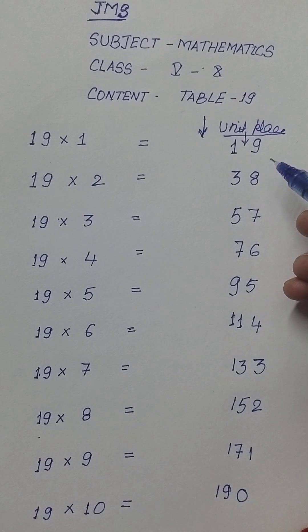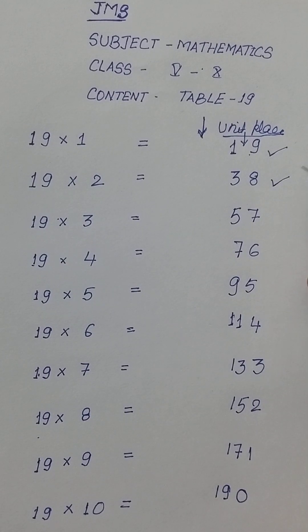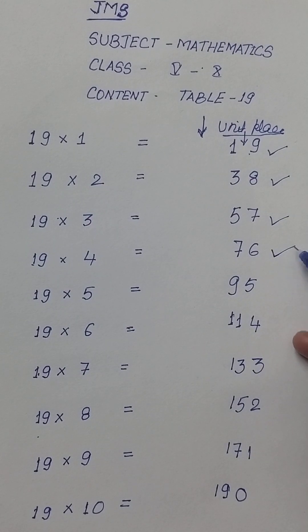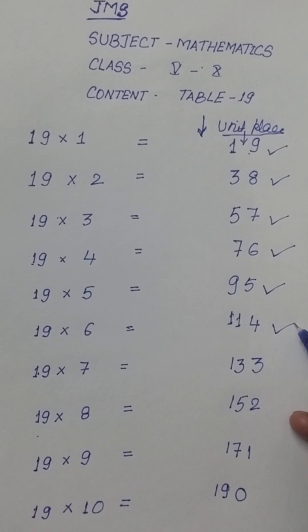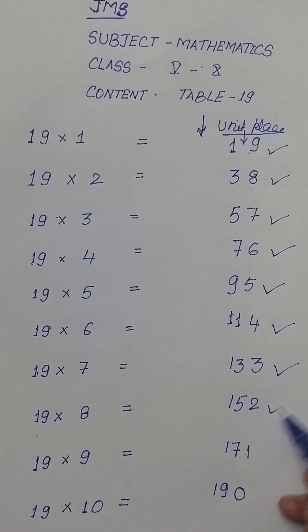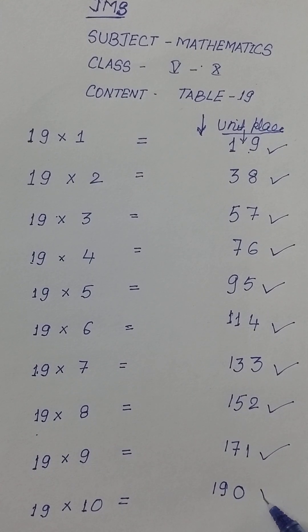Now you see that 19 table is ready. 19 ones are 19, 19 twos are 38, 19 threes are 57, 19 fours are 76, 19 fives are 95, 19 sixes are 114, 19 sevens are 133, 19 eights are 152, 19 nines are 171, 19 tens are 190.